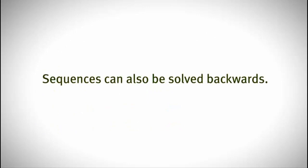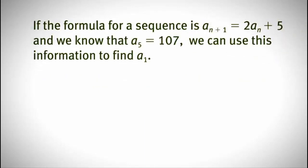If we know the formula for a sequence, as well as the position of a value within the sequence, we can also work backwards. For example, if the formula for a sequence, a sub n plus 1, is equal to 2 times a sub n plus 5, and we know that a sub 5 is equal to 107, we can use this information to solve for a sub 1.